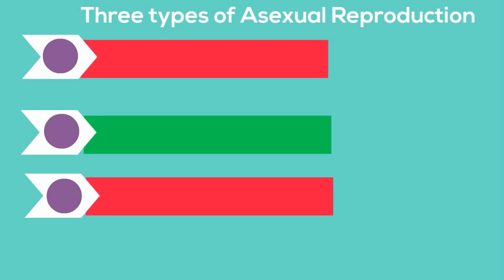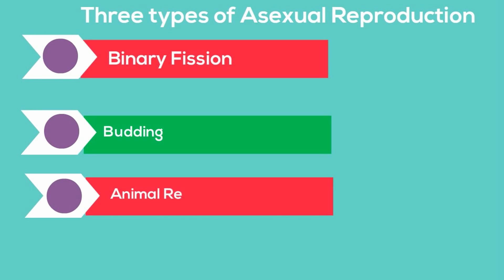In this video I'd like to talk about three types of asexual reproduction: Binary Fission, Budding, and Animal Regeneration.